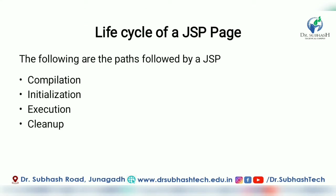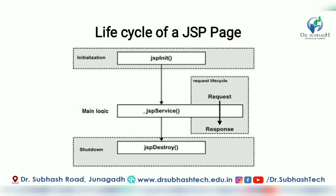Let us start with the JSP life cycle. There are four phases: first is compilation, second is initialization, third is execution, and fourth is cleanup. Looking at the block diagram of the JSP life cycle, there are three main methods: the first is JSP init method, the second is JSP service, and the third is destroy.